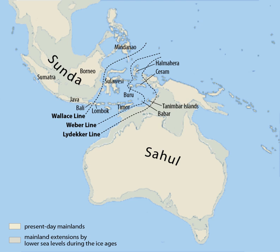When sea level was decreased by 30 to 40 meters or more, land bridges connected the islands of Borneo, Java, and Sumatra to the Malay Peninsula and mainland Asia. Because sea level has been 30 meters or more lower throughout much of the last 800,000 years, the current state of Borneo, Java, and Sumatra as islands has been a relatively rare occurrence throughout the Pleistocene.